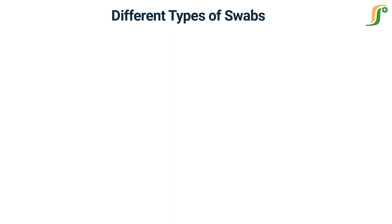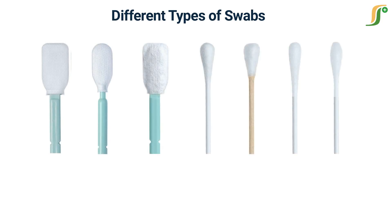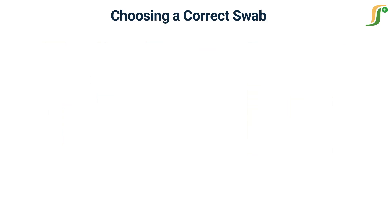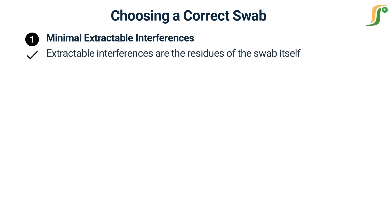To get accurate results, it is required to use the correct swab to take the sample, because the swab is the main component that has the highest chance of error and may result in inaccurate cleaning validation. These are the four most important criteria to choose a swab for cleaning validation.